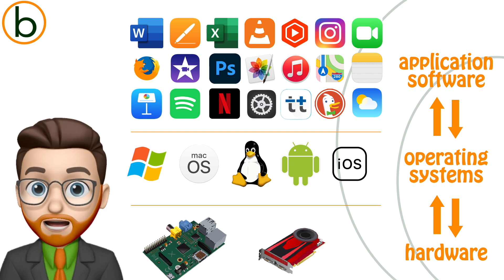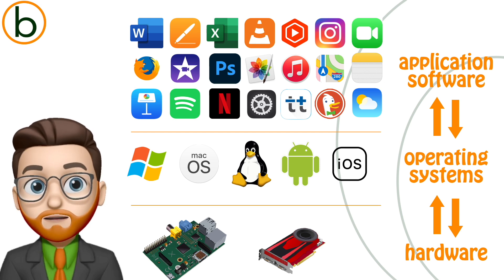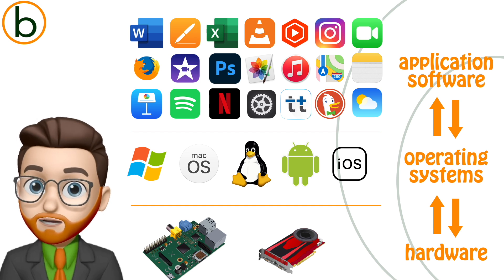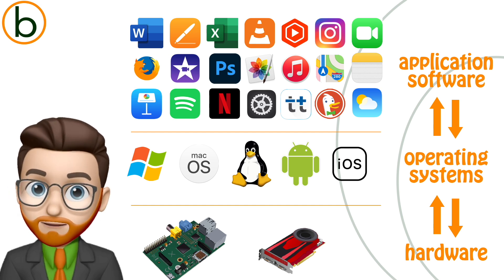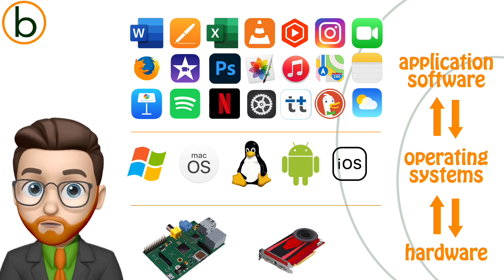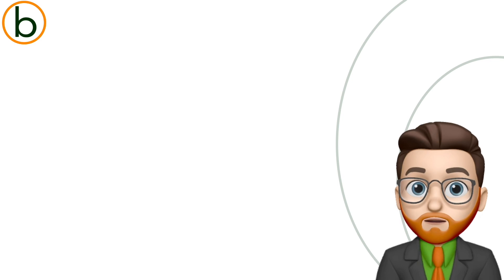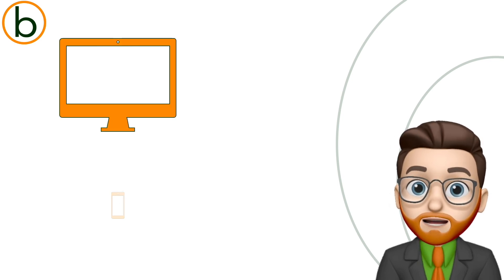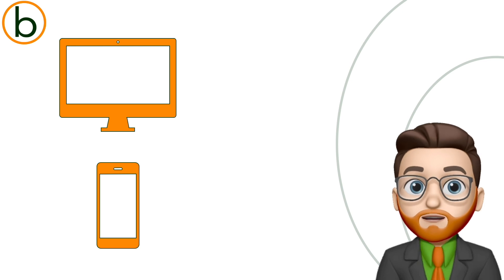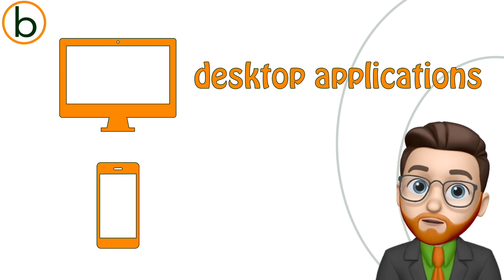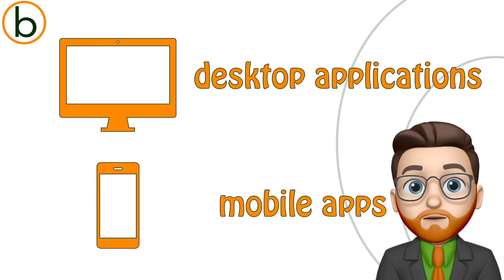That's why each app has a different version depending on the operating system it will work with. There's typically a version for Windows, one for macOS, one for Android, for Linux, for iOS, and so on. There are apps for regular computers and apps for mobile devices. The apps on your computer are called desktop applications, even though they also work on laptops. And the apps on your smartphone or tablet are called mobile apps.